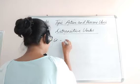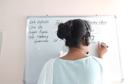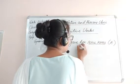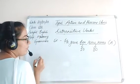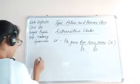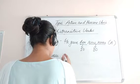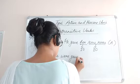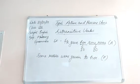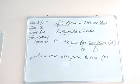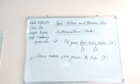Let's look at another example. Active voice: 'He gave her some roses.' This has two objects — 'her' is the indirect object and 'some roses' is the direct object. When we convert this into passive voice it becomes: 'Some roses were given to her.' Here we are using the direct object as the subject.